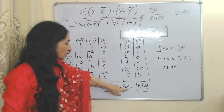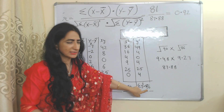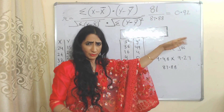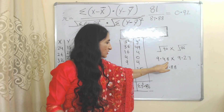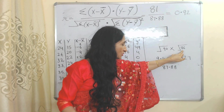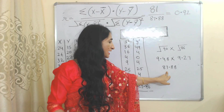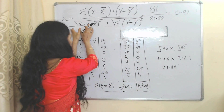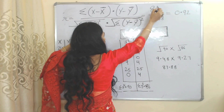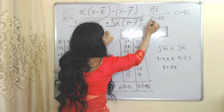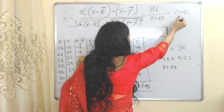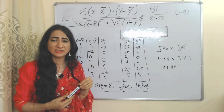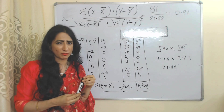We now find the square root of 90 and the square root of 86, then multiply both values together to get 87.88. This is the value of the denominator. Finally, 81 divided by 87.88 equals 0.92. So 0.92 is the value of the coefficient of correlation. That is all about correlation — thank you so much for watching this video!